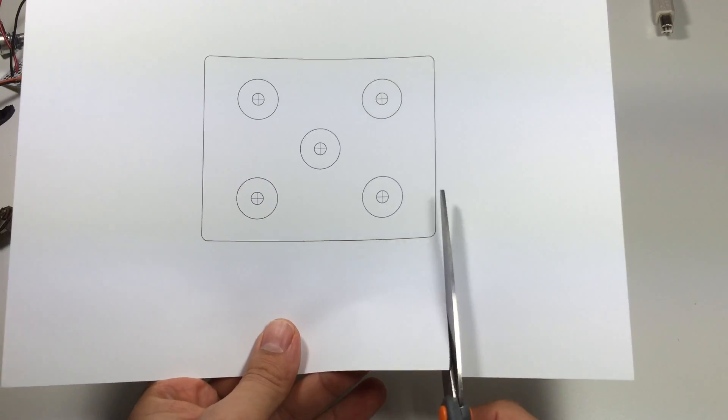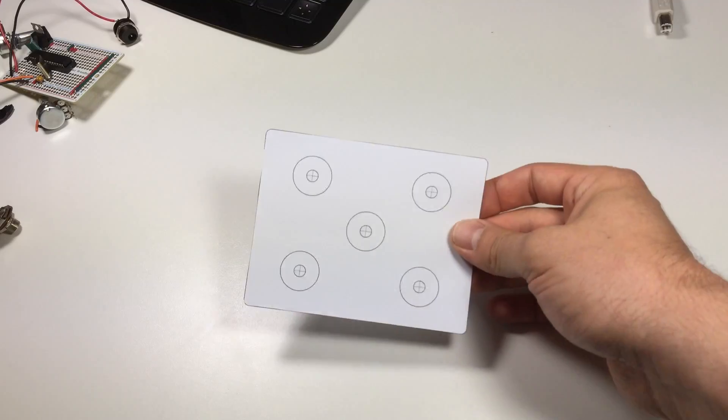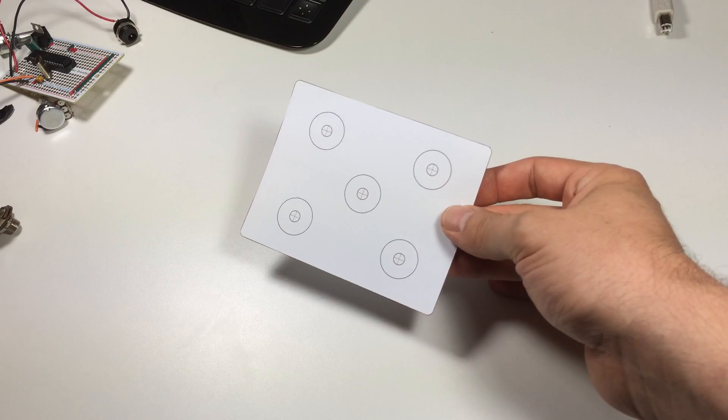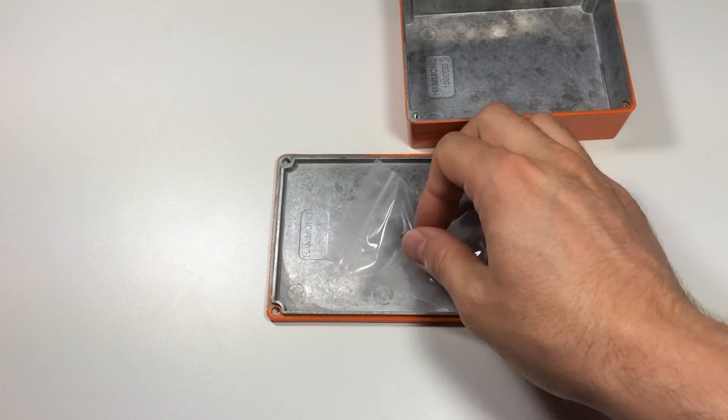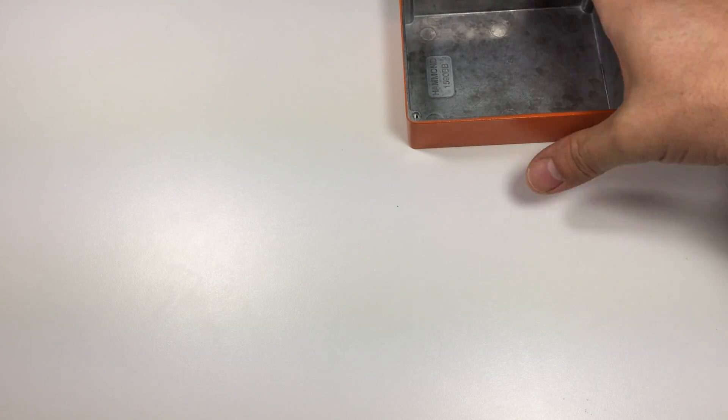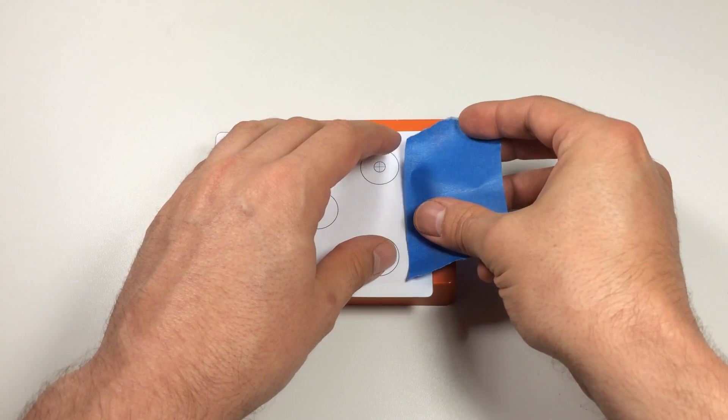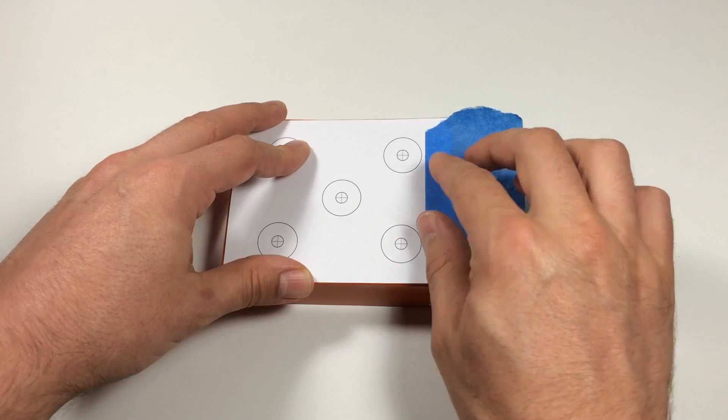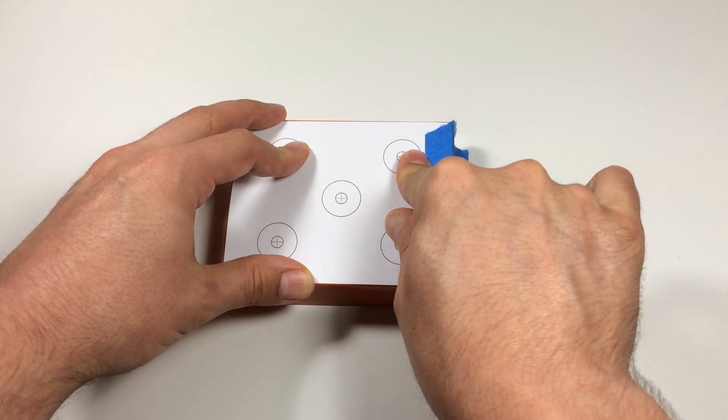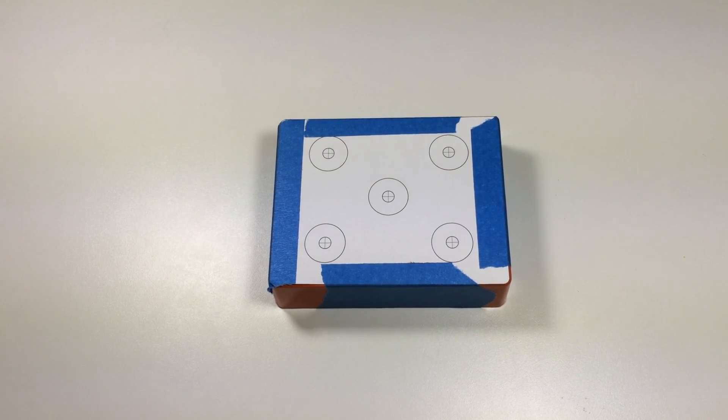Now, use some scissors to cut out the outline of the template. Remove the top from your project box. Center the drill guide on the top of the box and use some masking tape to tape down one edge. Now, tape down the remaining edges.